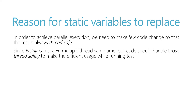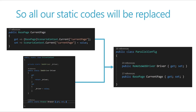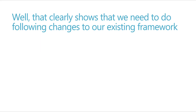In order to achieve parallel test execution, we need to make a few core changes so that tests always run thread-safe. Since NUnit can spawn multiple threads at the same time, our core should handle those threads safely for efficient test execution. All our static variables — the current page as well as the driver context — will be replaced and consolidated into one single class called ParallelConfig.